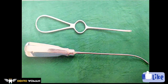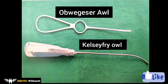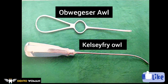Obwegeser's awl — a long, stout, needle-like instrument with an eye at the tip. The needle has a gradual curvature and the handle is fenestrated in the center for grip. It is used for passing wires around stable bone in maxillofacial trauma for closed reduction using internal skeletal suspensions.